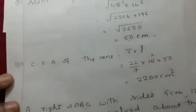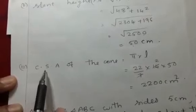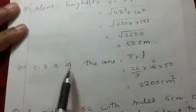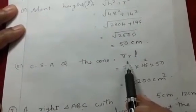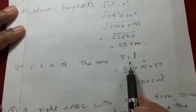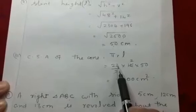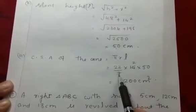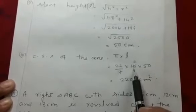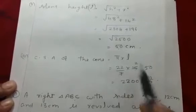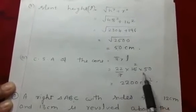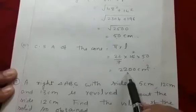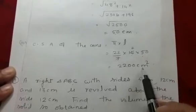Now the third part — we have to find out the curved surface area of the cone. You know that curved surface area of the cone = π × r × L. Put the values: π = 22/7, r = 14, L = 50. By calculating this, we get 2200 cm².